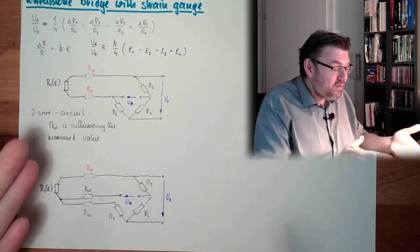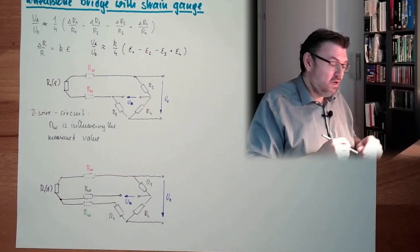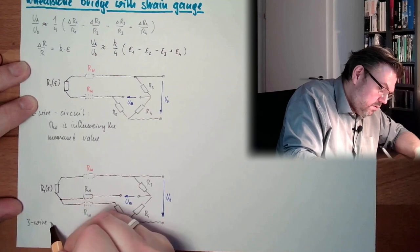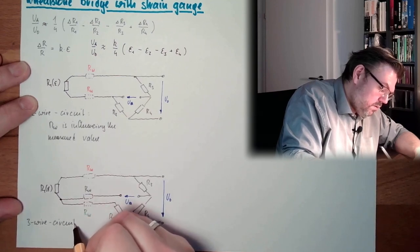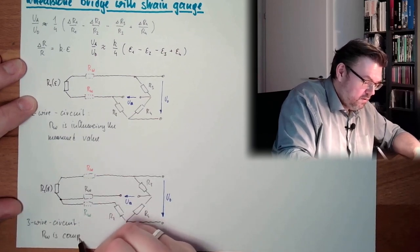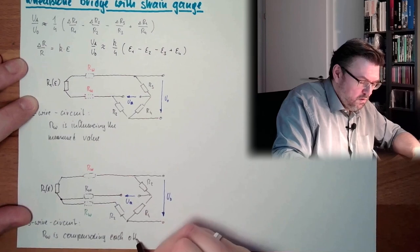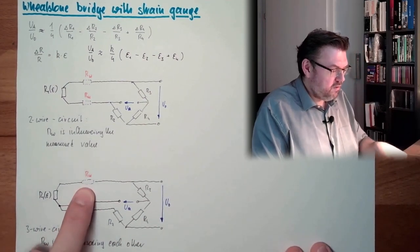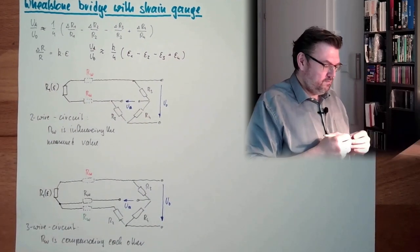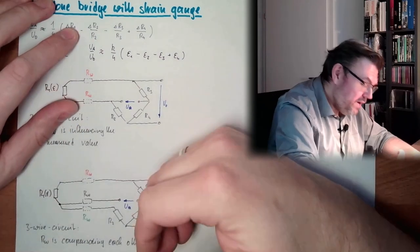So with this simple trick — the three-wire circuit using only one strain gauge — the wire resistance effects compensate each other. Because this side is negative, they are compensating. So we really measure now the strain of this strain gauge.